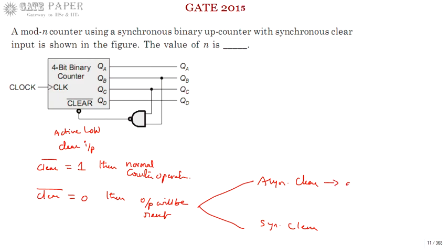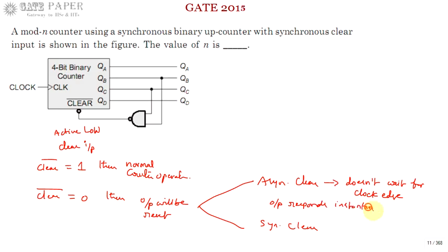Asynchronous clear doesn't wait for the clock edge because it is not in synchrony with the clock. So instantaneously, whenever you apply zero, the output responds immediately — output changes instantaneously when clear is given.